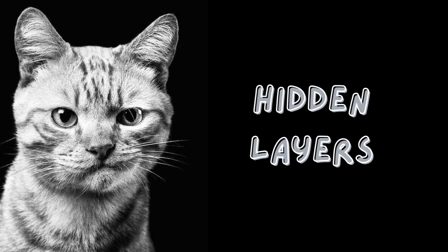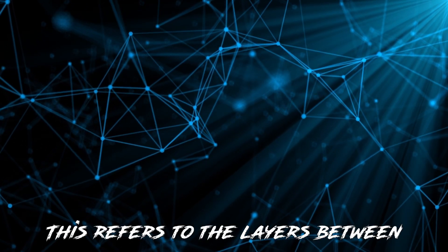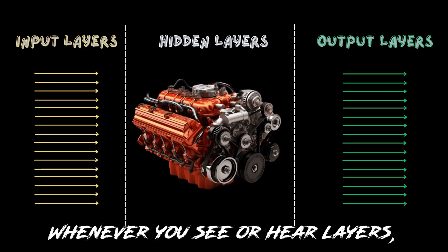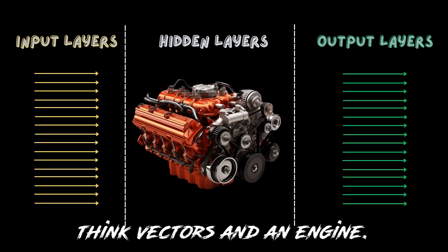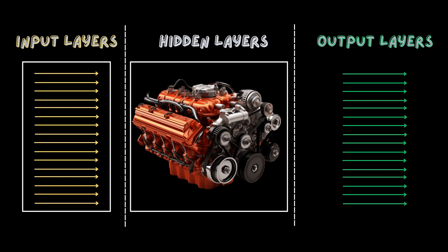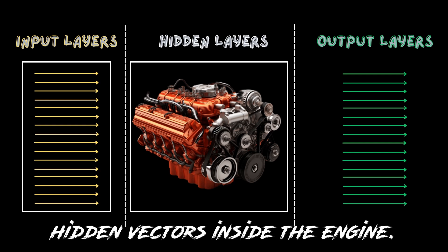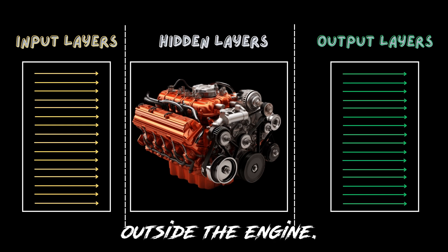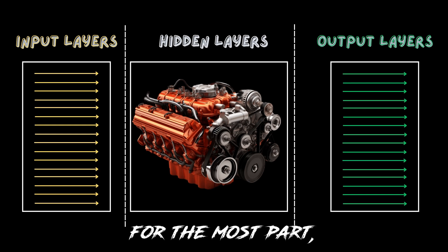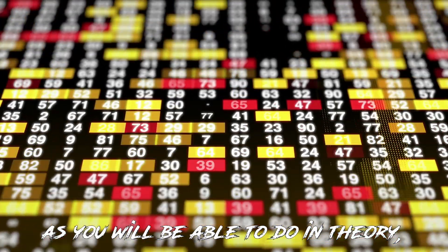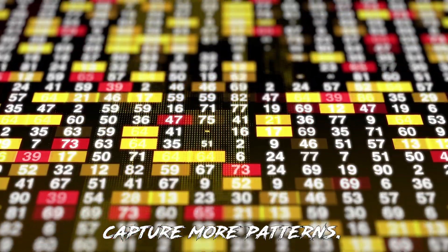Hidden layers refer to the layers between the input and output layers. Whenever you see or hear about layers, think vectors and an engine: one, you have the input vectors; two, hidden vectors inside the engine; three, output vectors outside the engine. For the most part, the more hidden layers the better, as you will theoretically be able to capture more patterns.